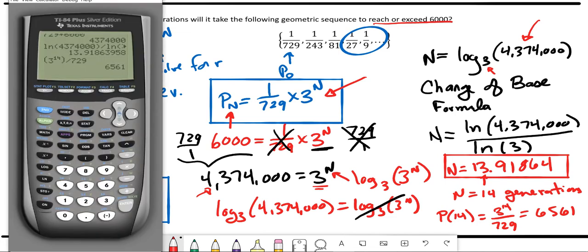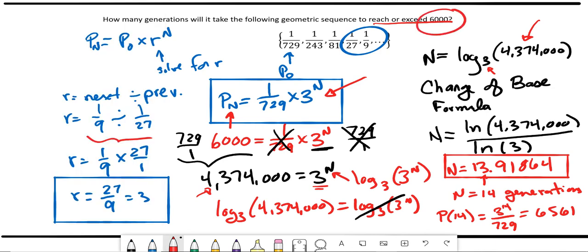If you were to plug in 13, so I changed a 14 exponent to a 13, you see we have 2,183. So once we multiply by 3 again, we get that 14th generation, we get that 6,561. And someplace in between the 13th and 14th generation, it'll be exactly 6,000.